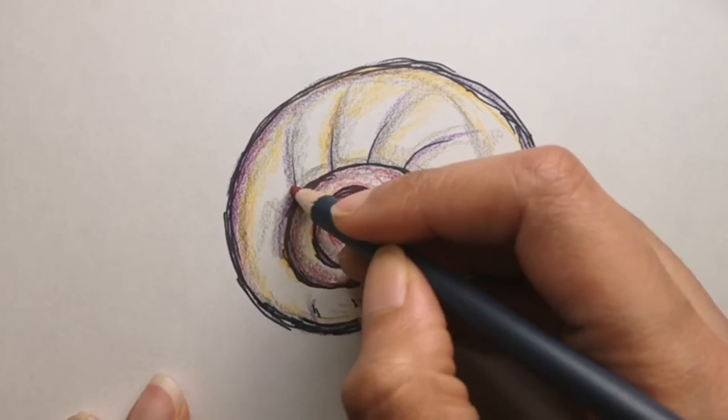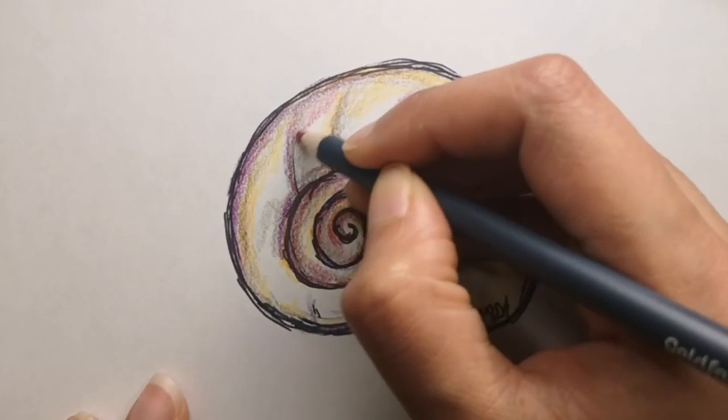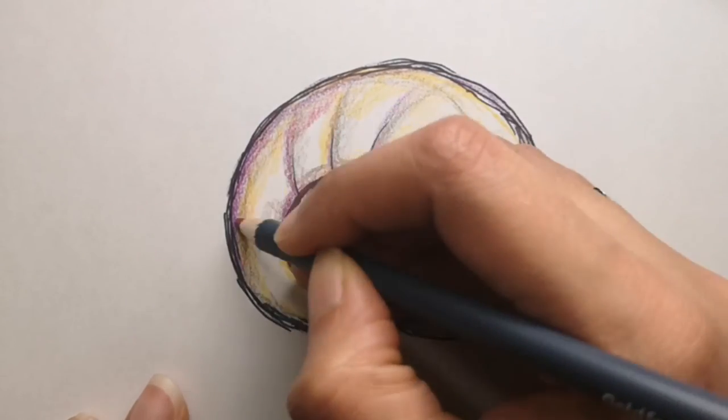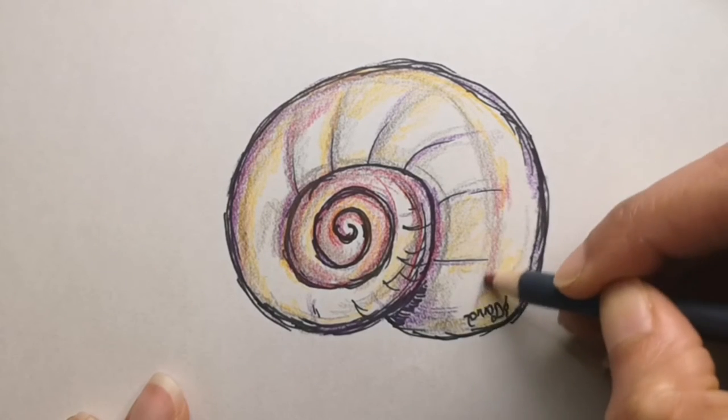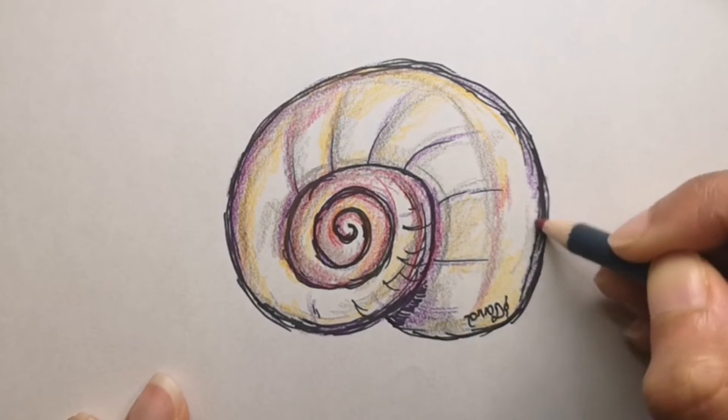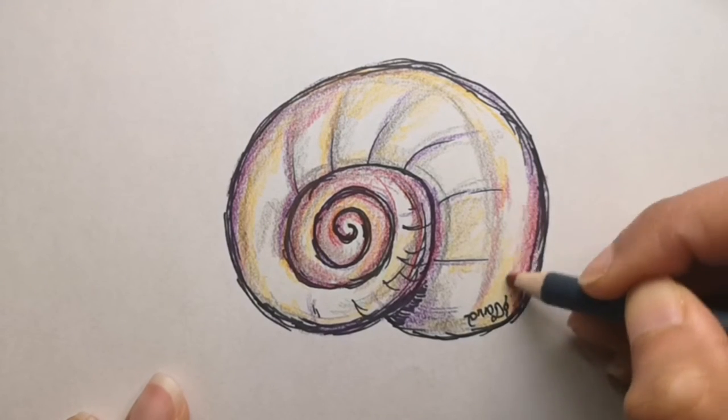No two argonaut shells are the same, apparently. For a long time, scientists believed that argonauts stole their thin iridescent shells from other animals.